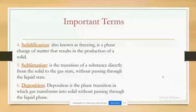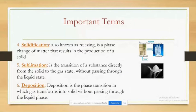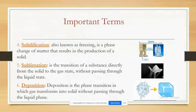Fourth, solidification, also known as freezing — it is a phase change of matter that results in the production of a solid. Fifth, sublimation — it is a transition of a substance directly from the solid to the gas state without passing through the liquid state.